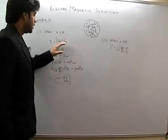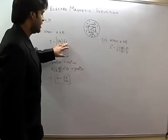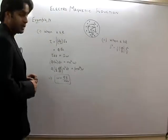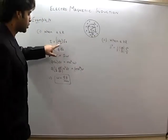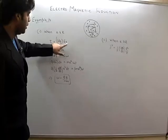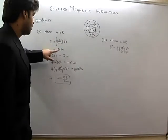Then how much torque will be? dq into E into a. E into a is the emf generated times the area. Now torque: q into E is the force, into a is the torque arm.